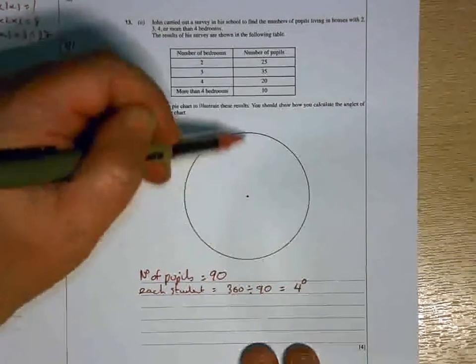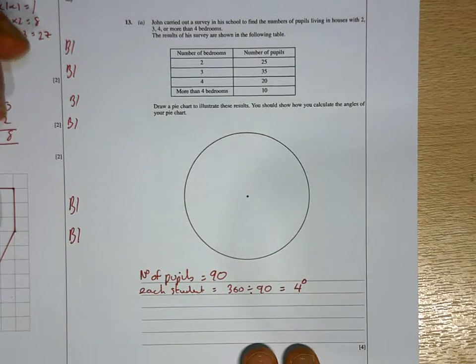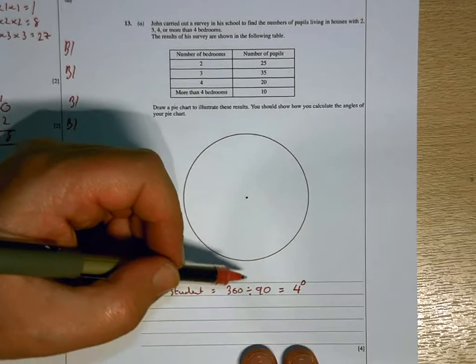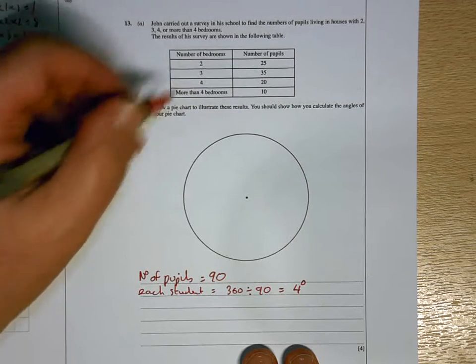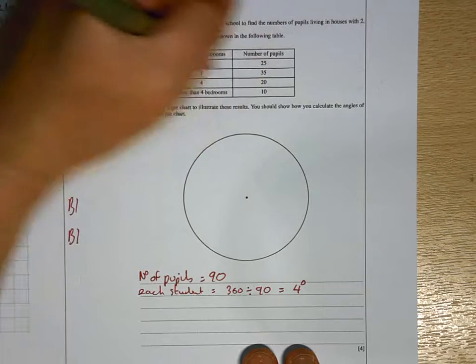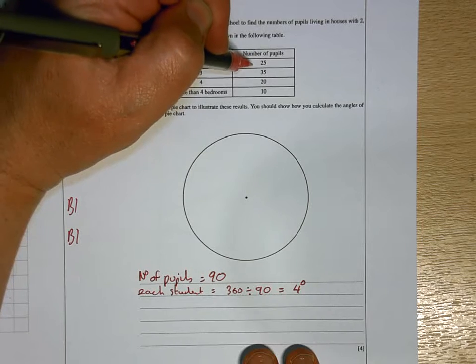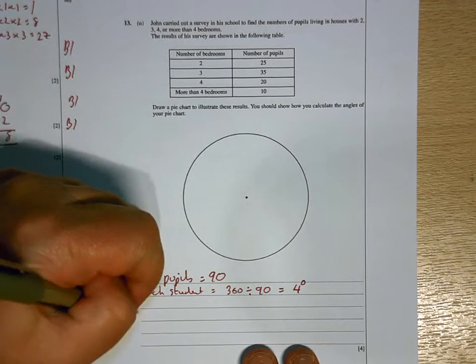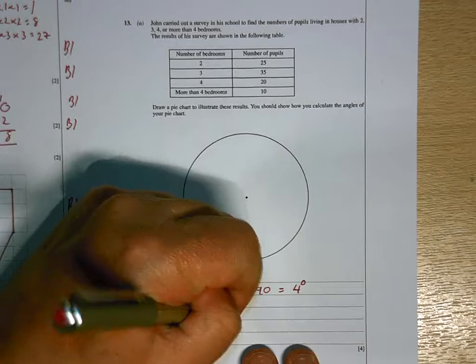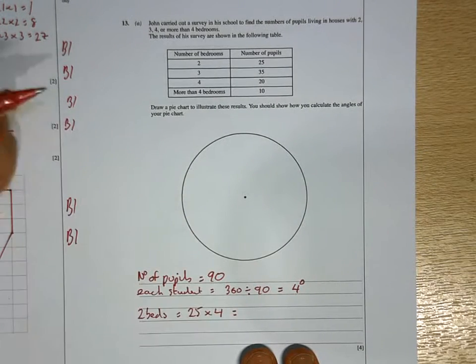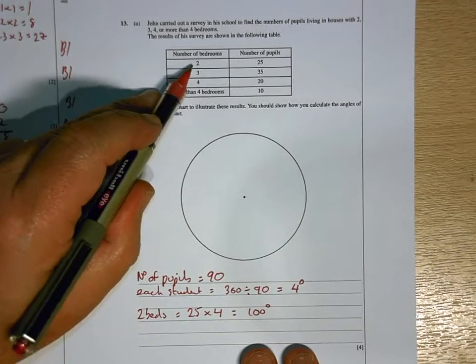So each student gets 4 degrees of that pie. So if I wanted to divide that up for each student, each of the 90 students would have a slice 4 degrees big. But I don't need to have 90 slices, because I want to share them into each of these. So what I need here is to show the two bedrooms, I'm going to have 25 kids there. Each of the 25 kids in there have 4 degrees. So two bedrooms will be 25 times 4.